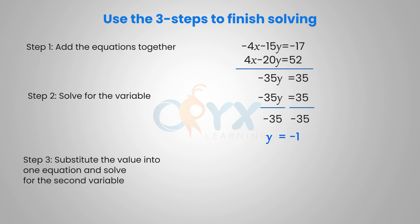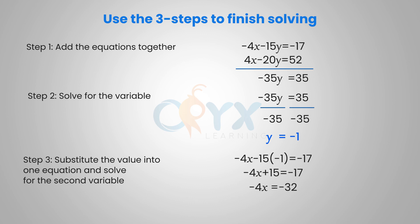Now that we have y solved, we substitute the value into one equation to solve for the second variable. We get −4x − 15(−1) = −17, which simplifies to −4x + 15 = −17. Subtracting 15 from both sides, −4x = −32. Dividing both sides by −4, x = 8. So with x = 8 and y = −1, the solution is the coordinate point (8, −1).